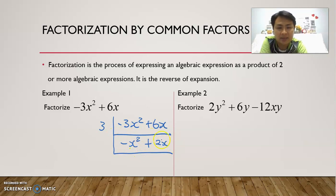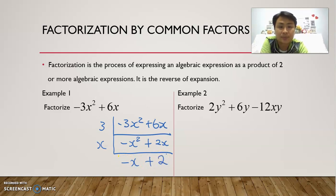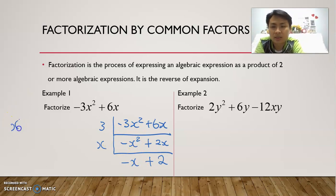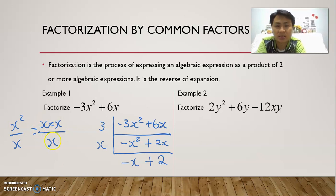The common factor between x squared and x is x, so we can divide by x. We get negative x plus 2. Why is x squared divided by x equal to x? x squared is actually x times x, over x. When we do the division, we cancel off one x and are left with a single x. That's why negative x squared divided by x gives us negative x.